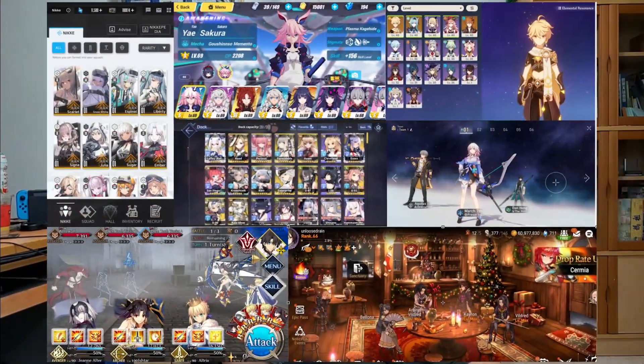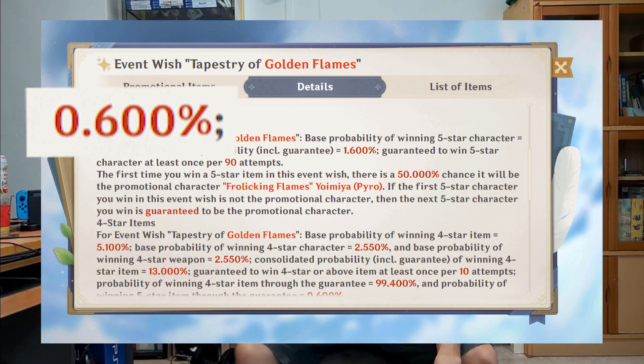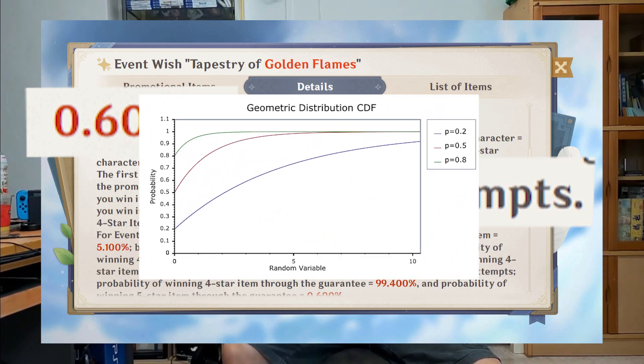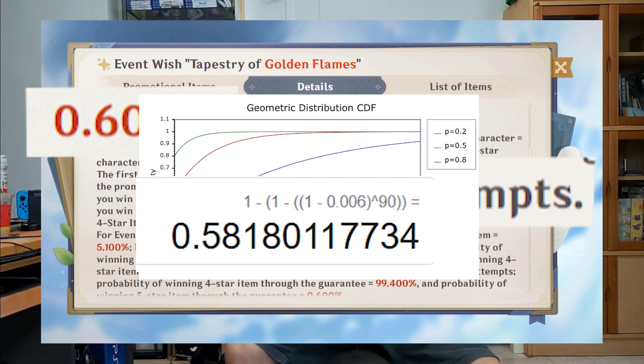Starting with Probability and Statistics — definitely one of the most useful modules. Thanks to that, I can apply the knowledge to the gacha games that I play. Take for example Genshin: the chances of getting a 5-star is 0.6%, hard pity is at 90 pulls, and if you were to apply the cumulative geometric probability, on average you will have a 58.18% chance of hitting hard pity.